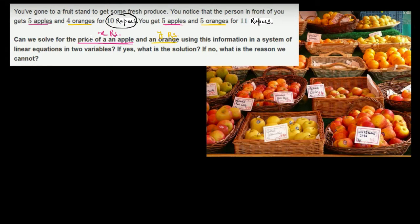The price of 5 apples is 5x rupees and the price of 4 oranges is 4y rupees. Adding them together gives the total of 10 rupees.